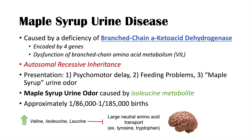The large neutral amino acids include tyrosine and tryptophan. So when we have very high levels of valine, isoleucine, and leucine, they inhibit the transport of tyrosine and tryptophan into the brain. Because we need tyrosine and tryptophan to make dopamine and serotonin respectively, we get a reduced synthesis of both dopamine and serotonin in the brain.